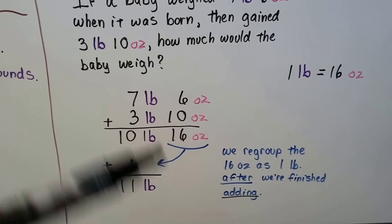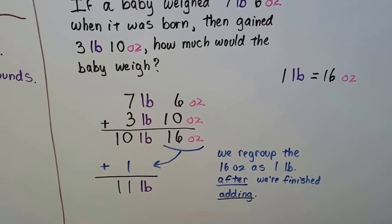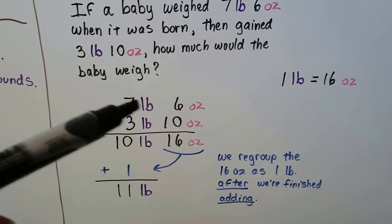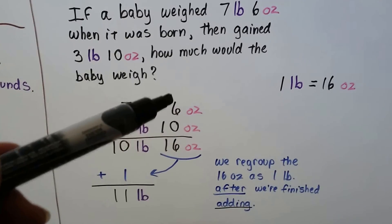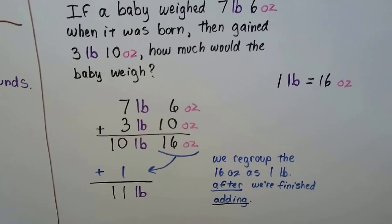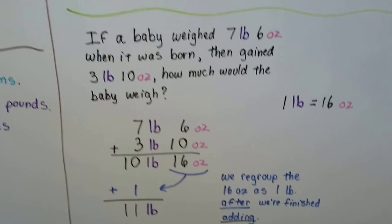We'll get into subtracting in the future. Because you could borrow if you have to. You could regroup a pound to be 16 ounces and add it to this amount of ounces. We'll get into that as you get a little bit older.